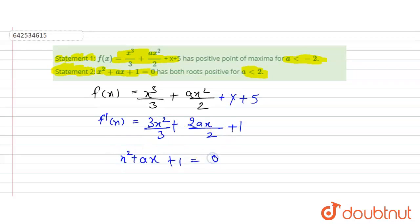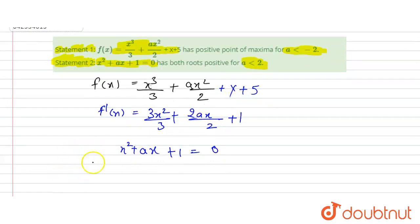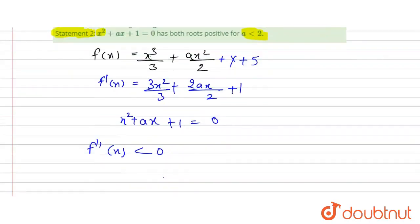Setting this equal to 0: x² + ax + 1 = 0. Now for the double derivative, f''(x) = 2x + a. For maxima, f''(x) < 0.